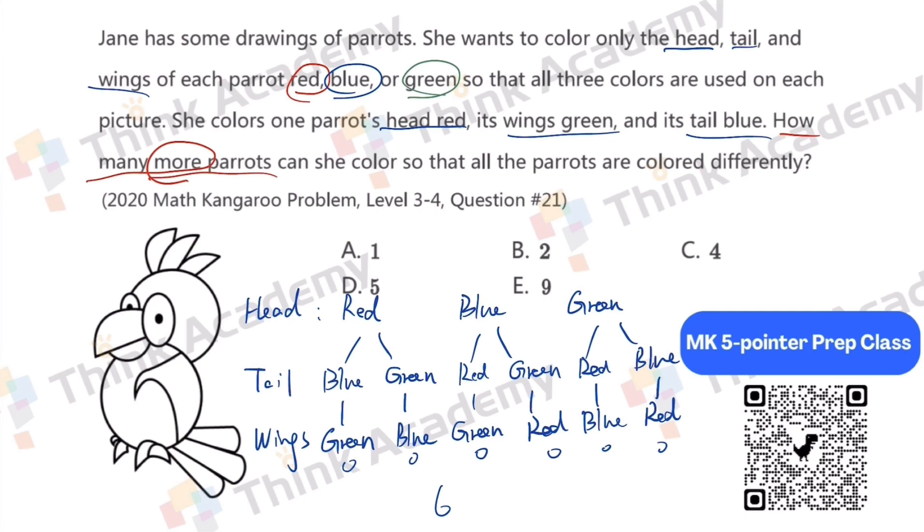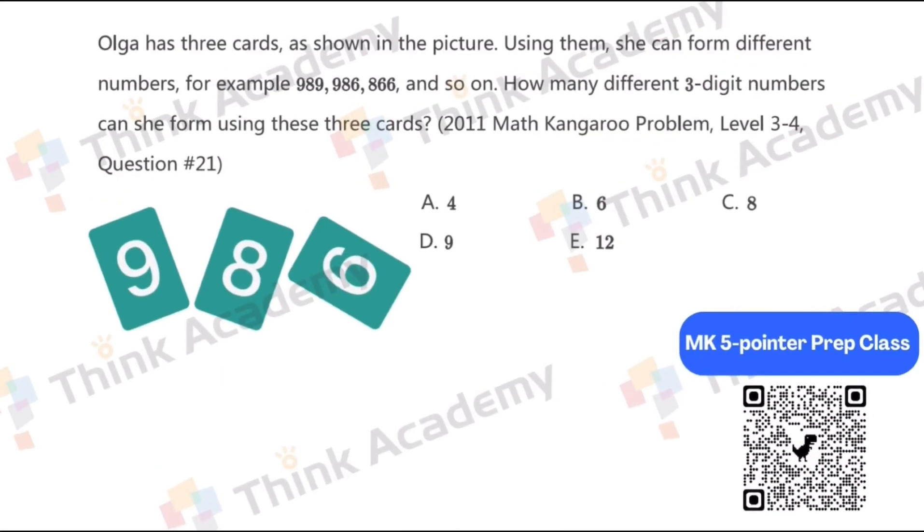Since she already colored one parrot with head red, wings green, and tail blue, so we got six minus one, which is five. So D is the answer. Okay, next question.